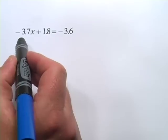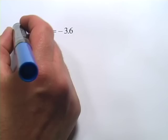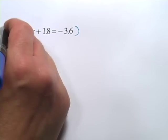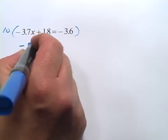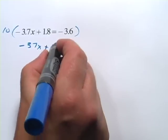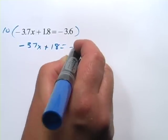In this case, if we multiply by 10, we get rid of all the decimals. So we'll take this whole thing, multiply each term by 10, and we get negative 37x plus 18 equals negative 36.